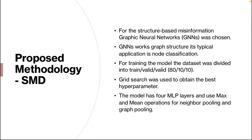The second subtask was structure-based misinformation detection. For that we used GNN — Graph Neural Networks. Graph Neural Networks work on graph structure; their typical application is node classification. To train the model, the dataset was divided into train, validation, and test splits of about 80%, 10%, and 10%. Grid search was used to obtain the best hyperparameters. The model had four MLP layers and used mean and max operations for neighbor pooling and graph pooling.